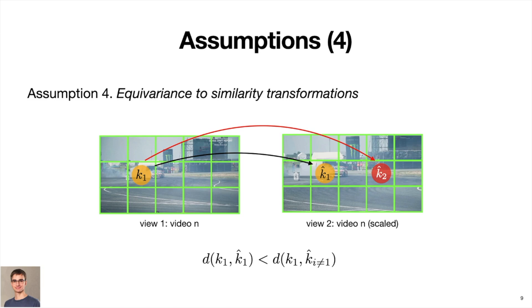A bit more technically, this means that the distance between two corresponding features in the two views should be closest with respect to all other possible pairs of features. This assumption has not yet been exploited in prior work to learn semantic feature representations from videos in an unsupervised way.